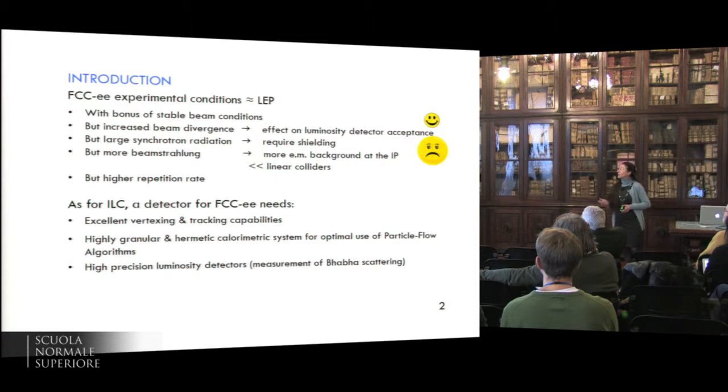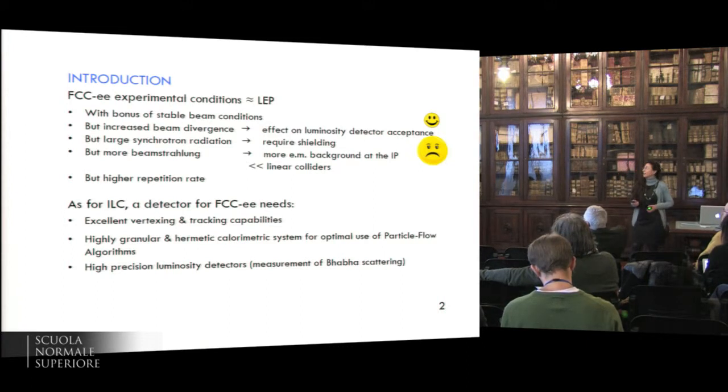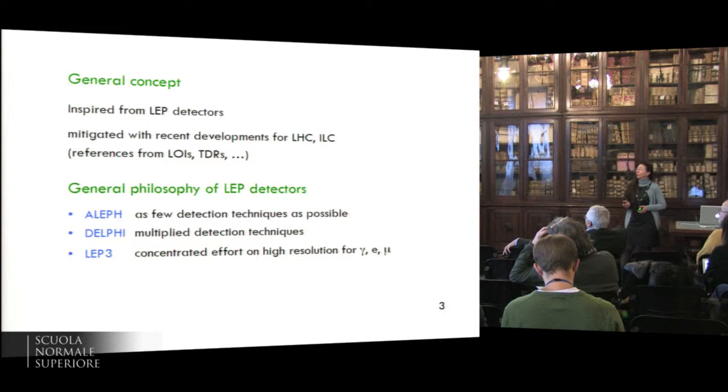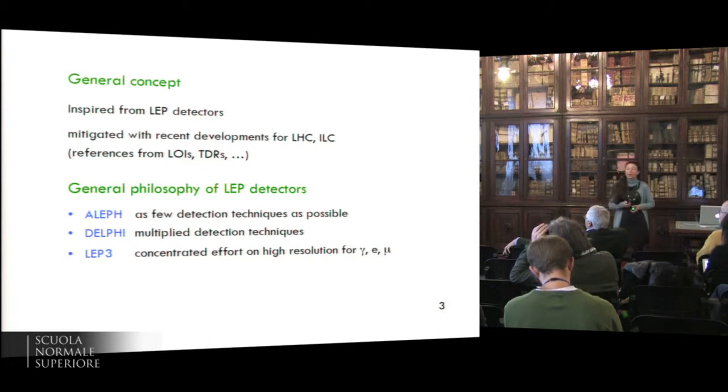As for ILC, a detector for FCC needs an excellent vertexing and tracking capabilities, high granular and hermetic calorimetric system for optimal use of the particle flow algorithms, and high-precision luminosity detectors. The general concept for this proposed detector is inspired from the LEP detectors, and it's mitigated with the recent developments we had for LHC and ILC, and most of the references come from the Letter of Intents and the Technical Design Reports for these detectors.